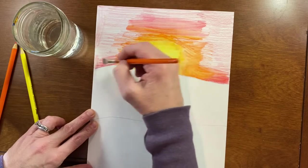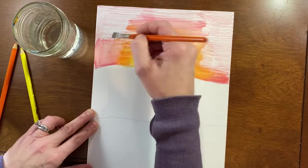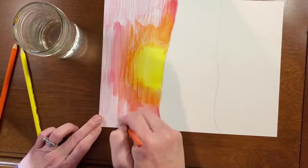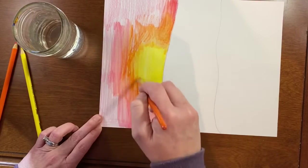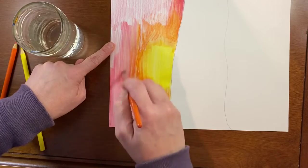And you want to activate all the color, so that means all the area that you put this watercolor pencil, you want to get it wet with the water. I'm gonna kind of keep painting from right to left like I colored, so that it looks like that sky kind of texture.